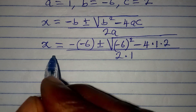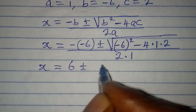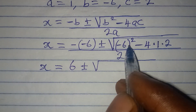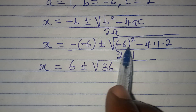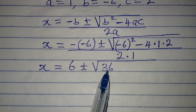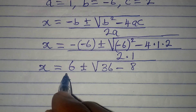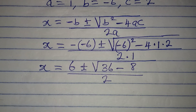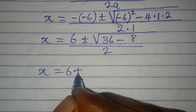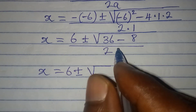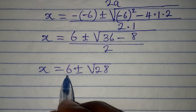Negative times negative gives us positive, so x equals 6 plus or minus the square root of minus 6 squared — remember minus 6 is in a bracket so it gives us positive 36 — then minus 4 times 1 times 2 gives us 8, all over 2. Taking a step further, 36 minus 8 gives us 28, so x equals 6 plus or minus root 28, over 2.